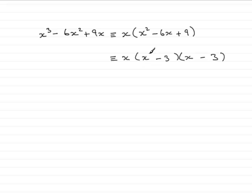And if you expand the brackets, you'll get minus 3x and another minus 3x gives the minus 6x. So you could actually write this as x times x minus 3 all squared.